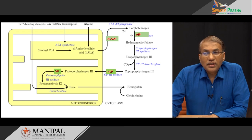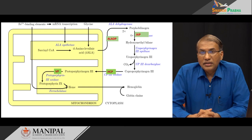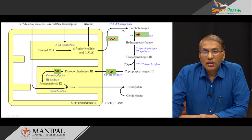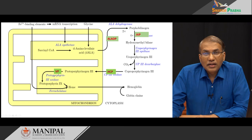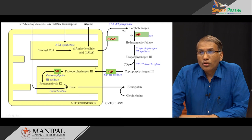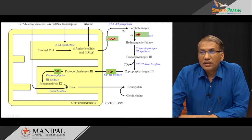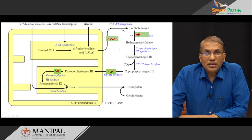The last acute porphyria is variegate porphyria, caused by a defect in protoporphyrinogen oxidase, which converts protoporphyrinogen IX to protoporphyrin IX. This also occurs in the mitochondria and comes with severe skin manifestations and photosensitivity. In total, there are four acute porphyrias: the first two do not have significant photosensitivity, while the last two do.